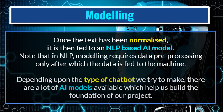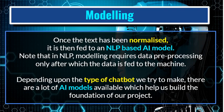The next step of the AI project cycle is modeling. Once the text has been normalized, it is fed to the NLP-based AI model for training. Note that in NLP, modeling requires data pre-processing only after which the data is fed to the machine. Depending upon the type of chatbot, there are a number of different chatbot types available, and we can select any of them as per our requirement. There are a lot of AI models available on the internet which help us build the foundation of our project.